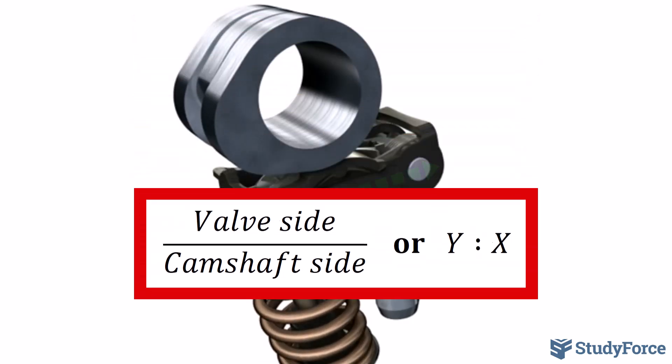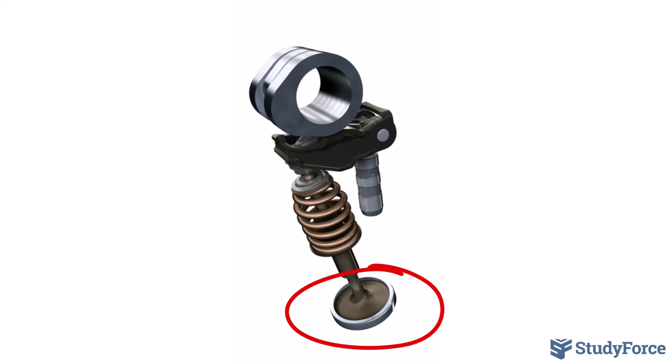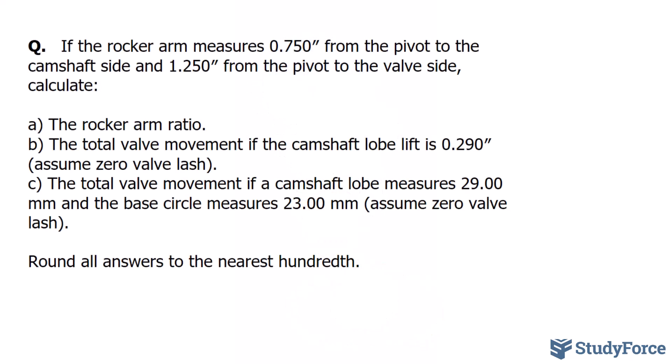Using this ratio, along with the camshaft lobe lift, we can calculate the total valve movement. Let's take a look at an example. If the rocker arm measures 0.750 inches from the pivot to the camshaft side and 1.250 inches from the pivot to the valve side, calculate the rocker arm ratio. We'll worry about questions B and C afterwards.